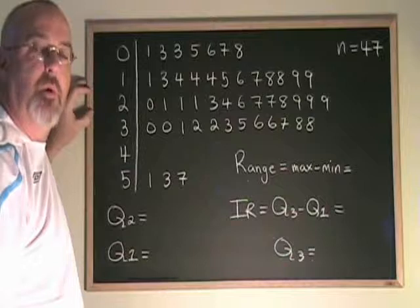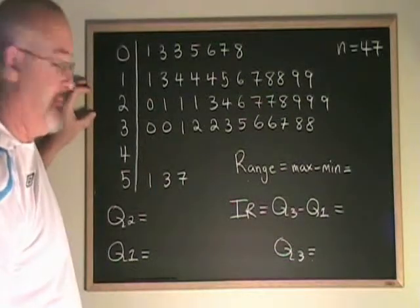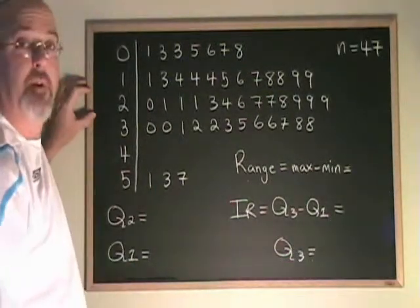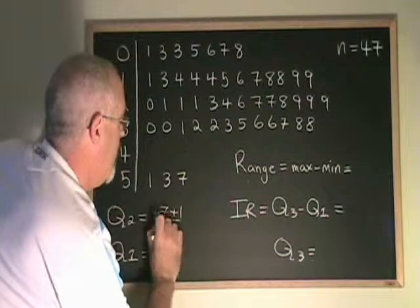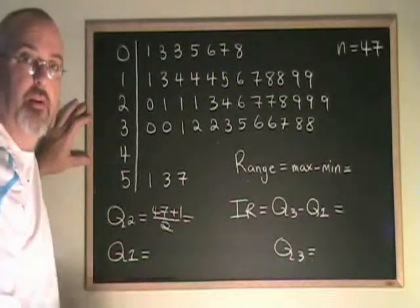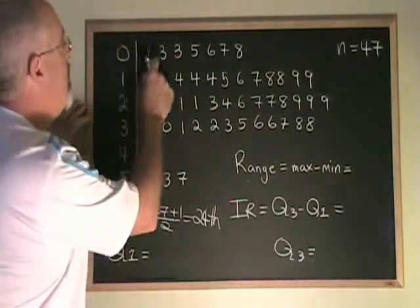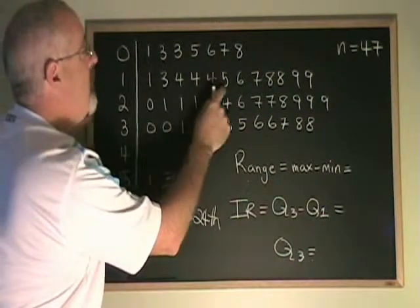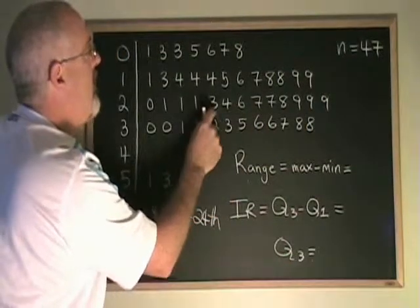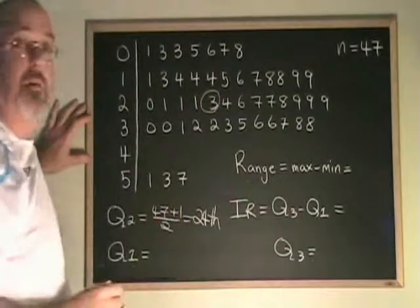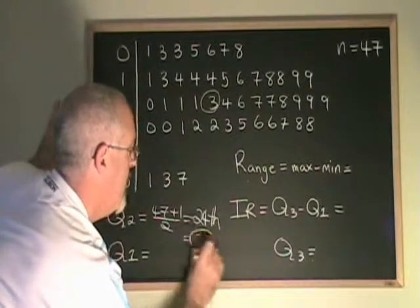Here's another example where we will find range and interquartile range. This data is in a stem and leaf table. First, we will find our Q2. We see that our n number is 47. So we put 47 plus 1 over 2, which is equal to 48 over 2. It's equal to the 24th value. And when we count through the data, the 24th value is equal to 23. All right, Q2 is 23.